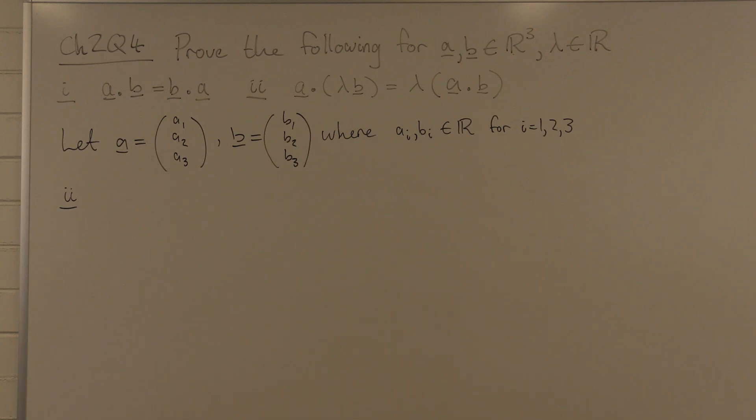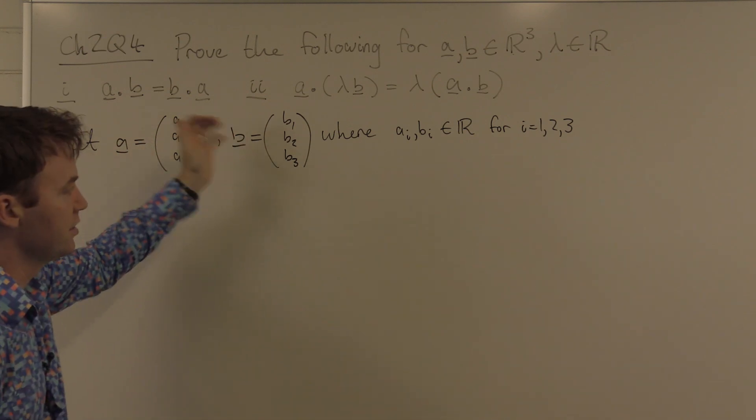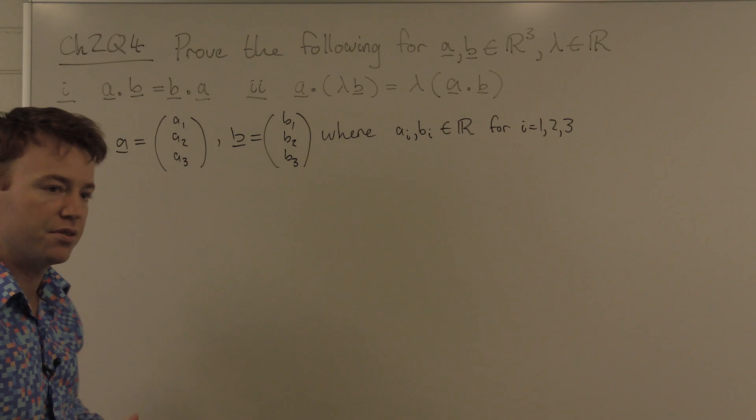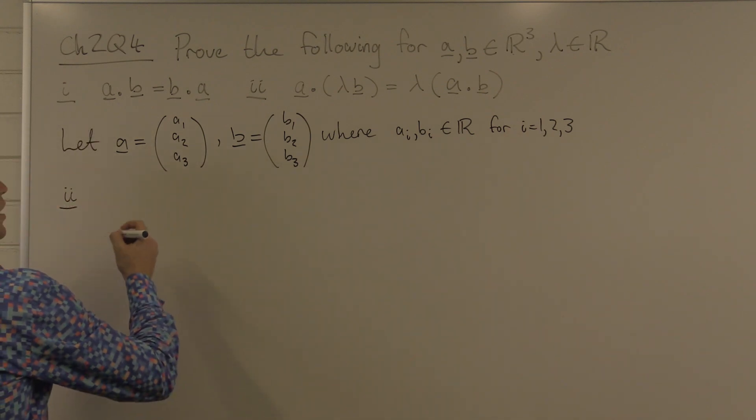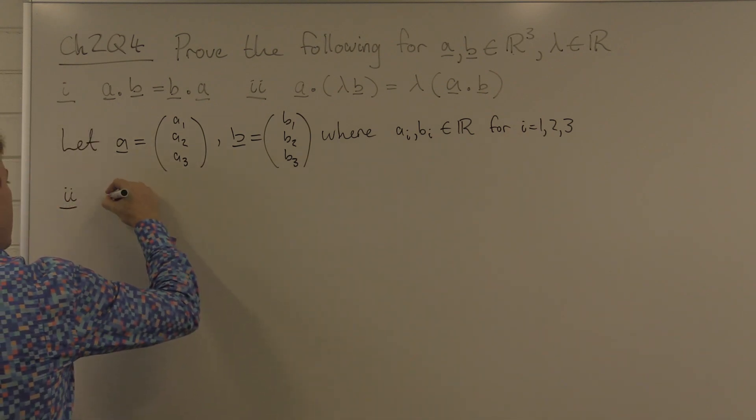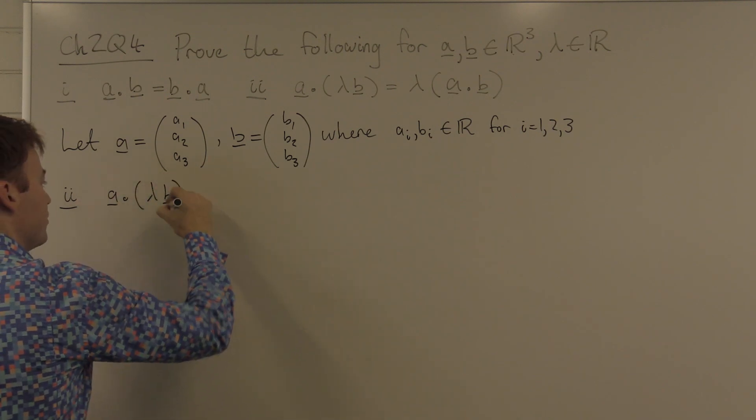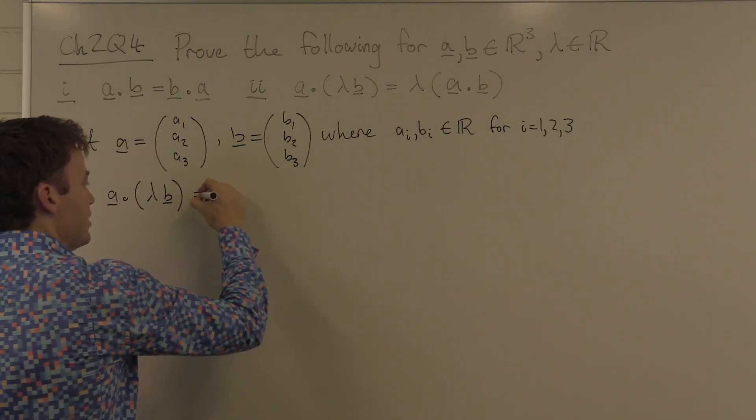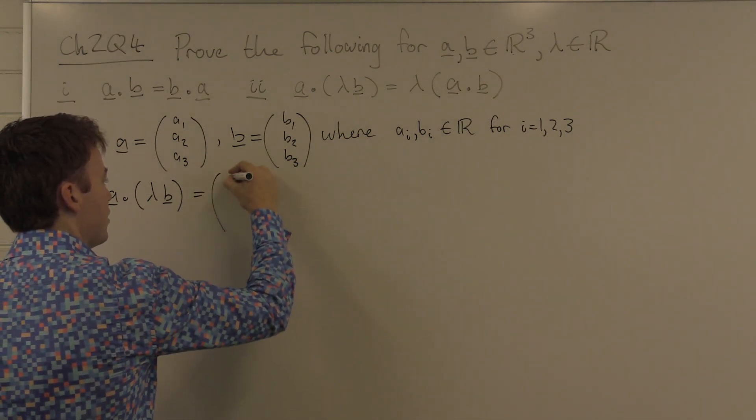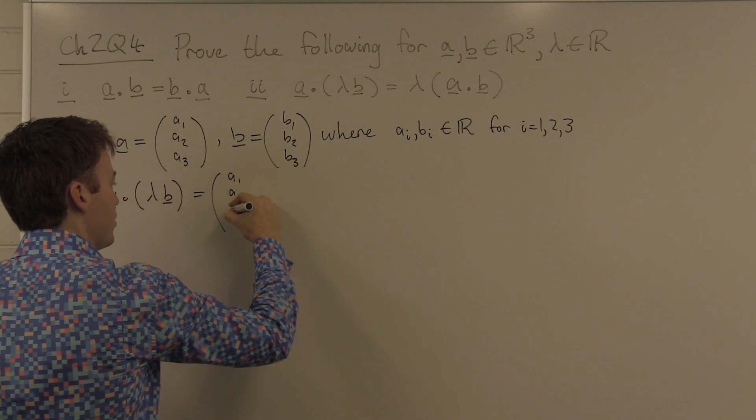And now for part two. Again, we start off by saying A is a three-dimensional vector of real numbers and B is a three-dimensional vector of real numbers. Then the left hand side is A dotted with lambda B. Well, we know what A is: that's A1, A2, A3.